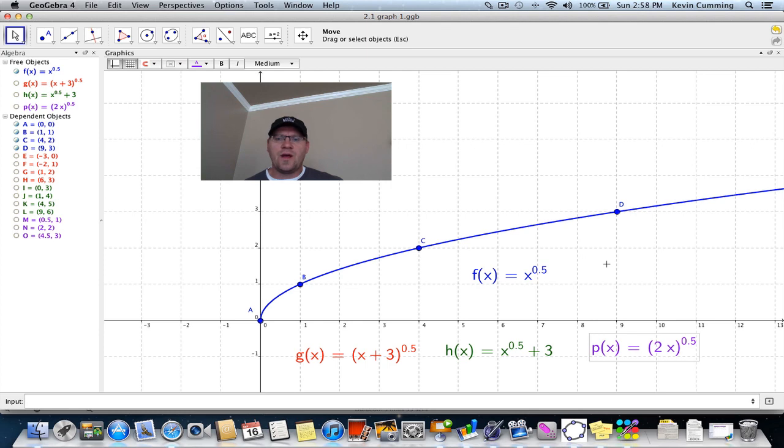The blue graph is f(x) equals x to the power of 0.5. Now let's take a look at our red graph, which is (x plus 3) to the power of 0.5. If you remember from last unit, when it's x plus 3 inside the brackets, that should mean a horizontal shift of 3 units to the left. Let's see if that happens.